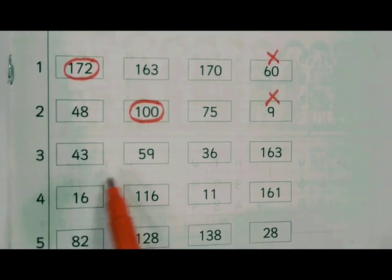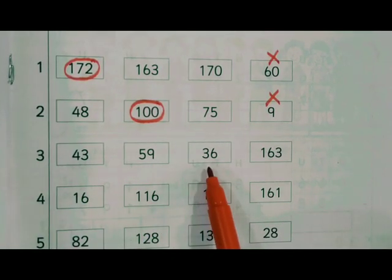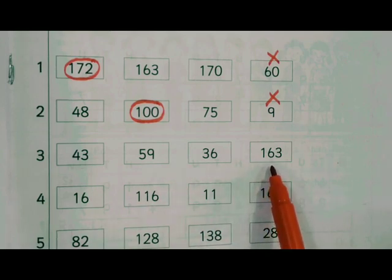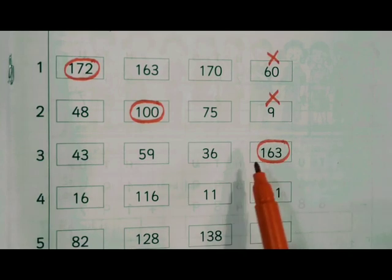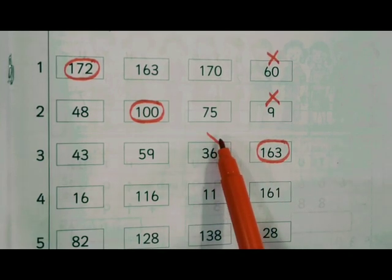43, 59, 36, 163. The greatest number is 163 and 36 is the least number.